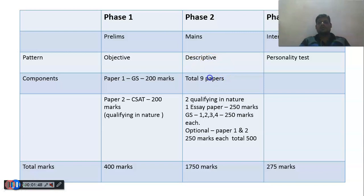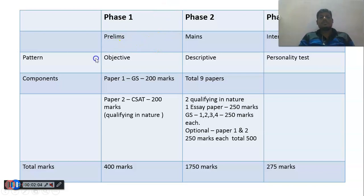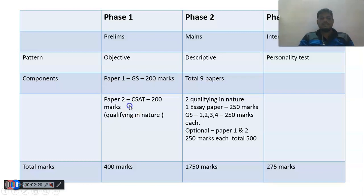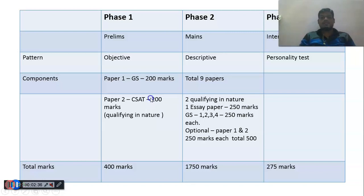There is detailed information here relating to the phases of the examination — pause and read it. We will discuss only Phase 1, that is Prelims. The remaining 2 phases will have separate lectures. The pattern of Prelims is objective — a question will be there with 4 options and you have to select the most correct one. Prelims has 2 papers: Paper 1 is GS, known as General Studies, for 200 marks; Paper 2 is CSAT, Civil Services Aptitude Test, also for 200 marks. The difference is that CSAT is a qualifying paper — you only need to secure 33% marks. Your final prelims score will be solely based on your GS score, provided that you have qualified your CSAT paper.